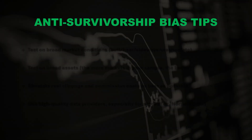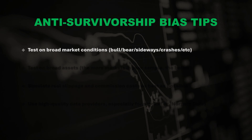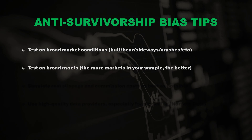Here are a few tips for avoiding survivorship bias. Always test on broad market conditions — bullish, bearish, sideways consolidation, market crashes, etc. Test on broad assets, and avoid single-market systems or small baskets of assets. If you trade Forex, for example, try to test your system on all the major and minor pairs. You don't need to trade them all or expect all of them to be profitable. But if your system only works on a single currency, it's probably curve fitted and an unstable system which is likely to fail in the near future.